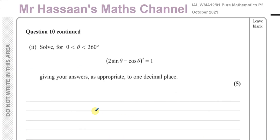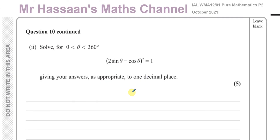Now for part 2: solve for θ between 0° and 360°, the equation (2sinθ − cosθ)² = 1. Taking the square root of both sides would leave 2sinθ − cosθ = ±1, which isn't easy to work with. So the approach is to expand the bracket instead.